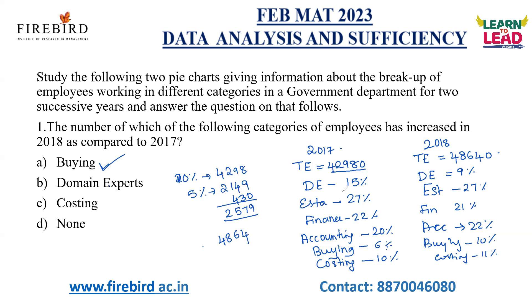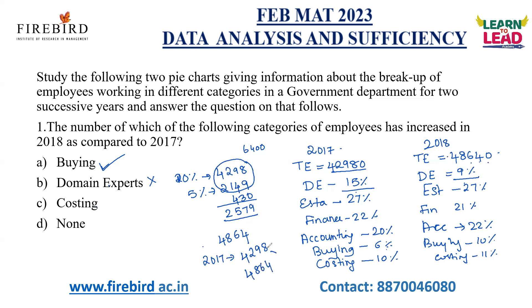In case of domain experts, in 2017 it is 15% and in 2018 it is 9%. 15% of 42,980 is above 6,400, while 9% of 48,640 is less than 4,800 — so definitely there is a decrease in domain experts, and it is not the answer. For costing, in 2017 it is 10%, giving 4,298; in 2018 it is 11% of 48,640, which will be more than 4,864 — so compared to 2017, costing also shows an increase. You can choose both buying and costing as the answer.